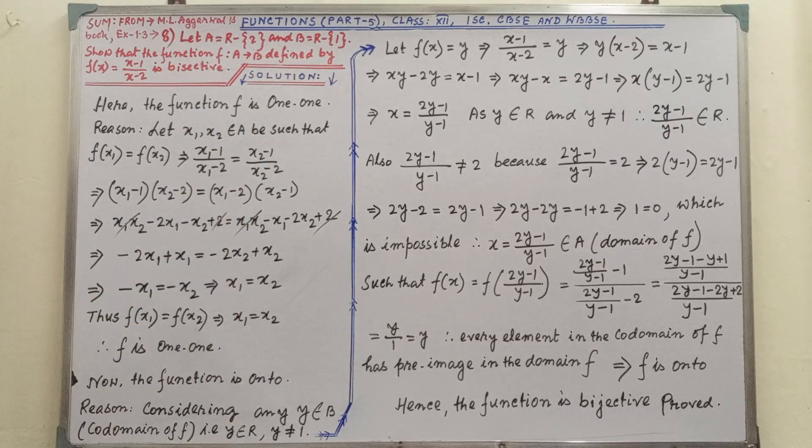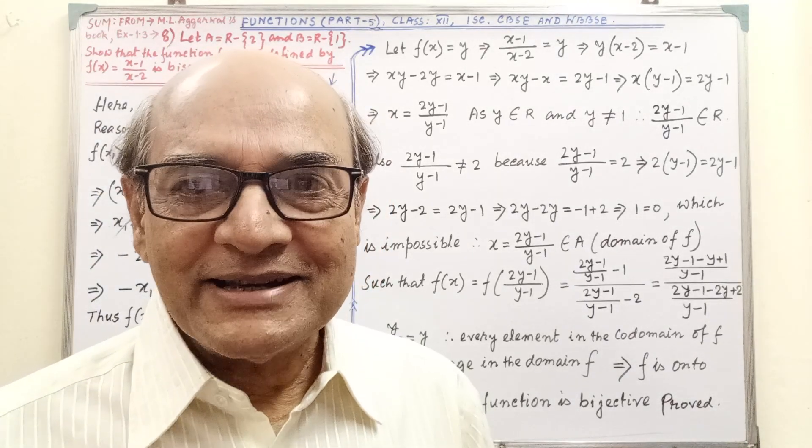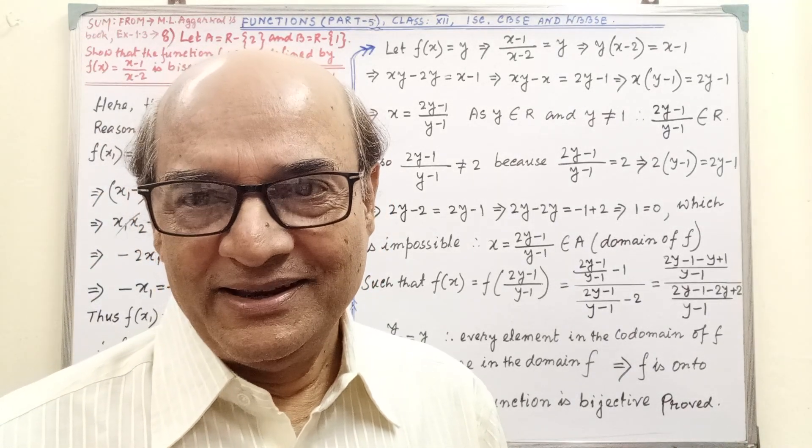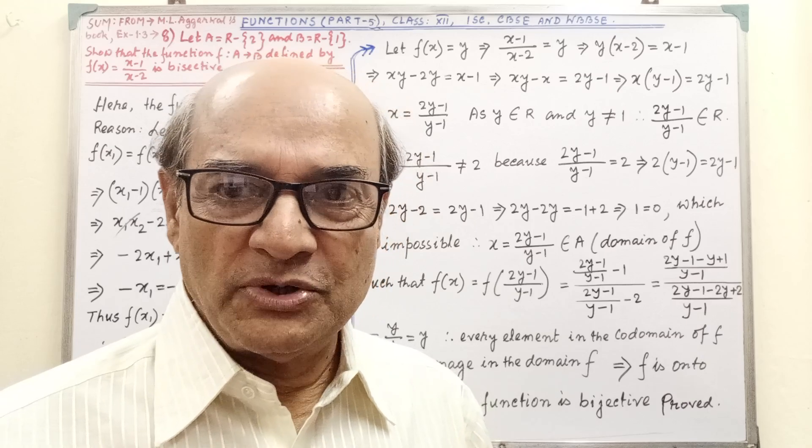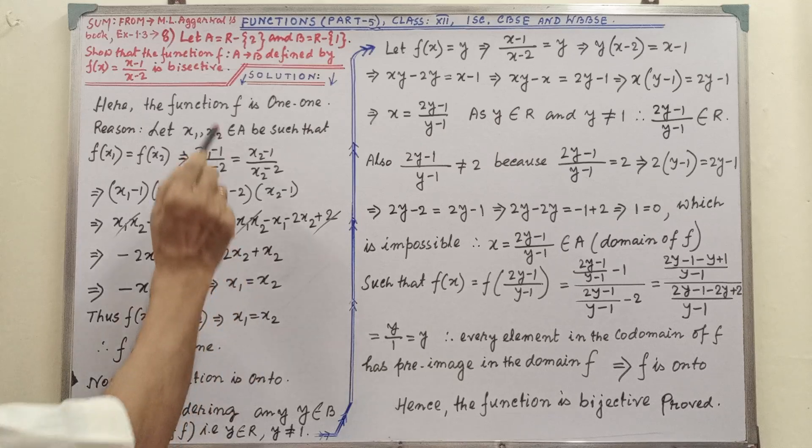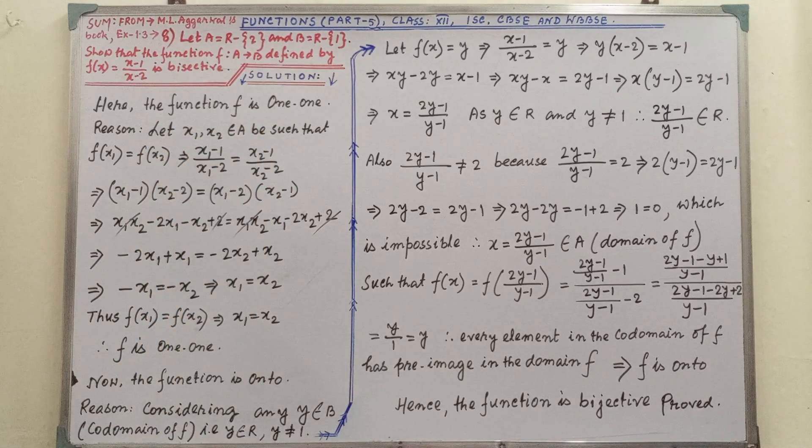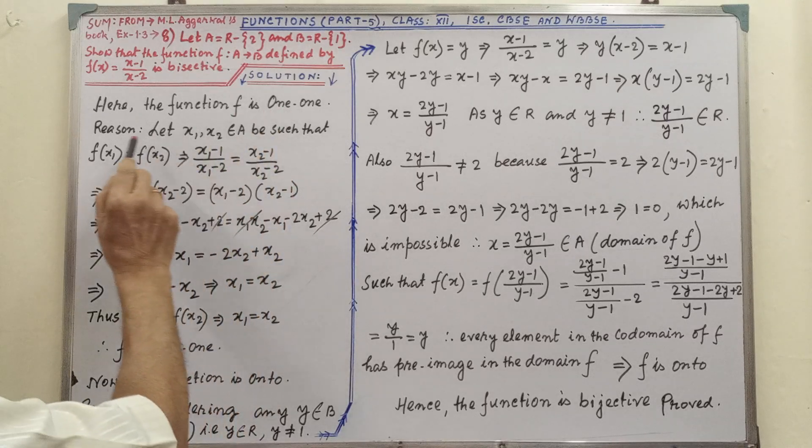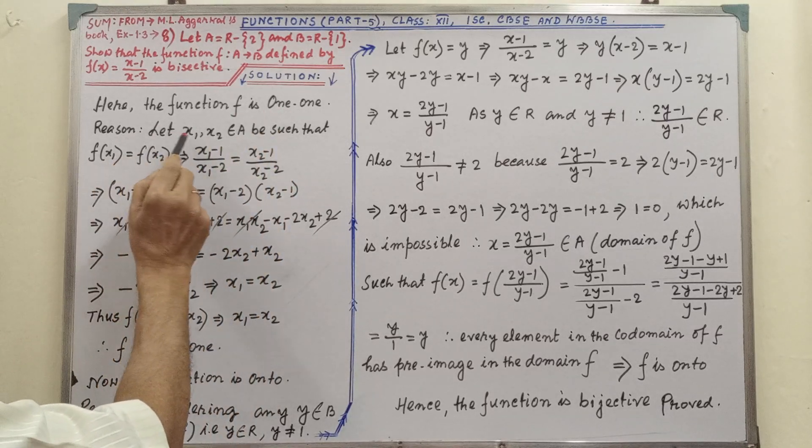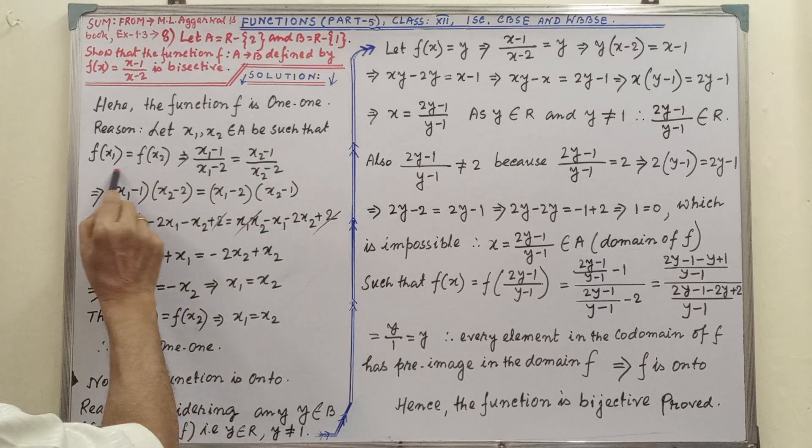Now pay your attention on the solution. This type of sum you have to understand the logic clearly. And after observing the video number 4, then your logic will be cleared. Now pay your attention on the solution. Here the function F is 1,1. How it will be 1,1? See, reason let X1, X2 belongs to A be such that F(X1), F(X2) equal to